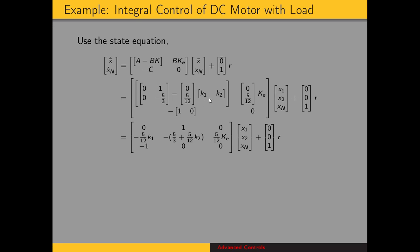Going ahead and distributing all the terms, we end up with this new state matrix. The top left submatrix is A minus BK: entries 0, 1, negative 5/12 k1, and negative (5/3 + 5/12 k2). Then B times ke gives 0 and 5/12 ke. Negative C gives negative 1 and 0, and finally we have a 0. That new state matrix multiplied by our state vector plus the new input matrix times r gives our state equation.